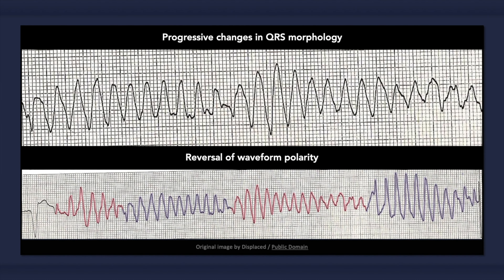The main ECG findings that can occur with Torsades de Pointes include polymorphism of QRS complexes with progressive changes in height, width, shape, and axis, and the recurring reversal of waveform polarity. Be aware that the rapid and gradual alteration of QRS complexes can be mistaken for ventricular fibrillation. Ventricular fibrillation, however, is completely chaotic without any discernible pattern or similarity between adjacent waveforms.